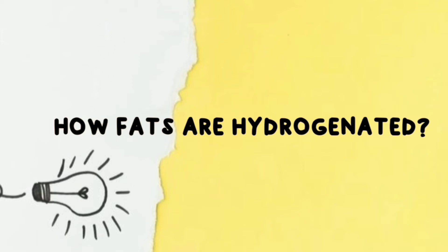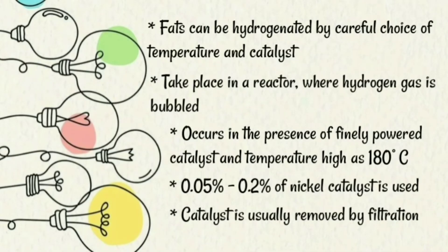Next topic: how fats are hydrogenated. Fats can be hydrogenated by careful choice of temperature and catalyst. It takes place in a reactor where hydrogen gas is bubbled. It occurs in the presence of finely powdered catalyst and temperatures as high as 180 degrees Celsius. Usually 0.05% to 0.2% of nickel catalyst is used.